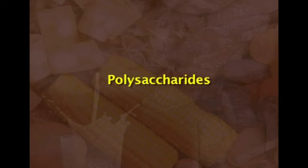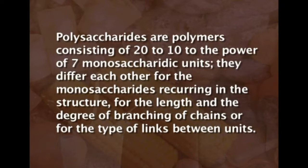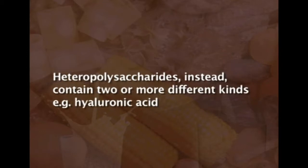Polysaccharides are polymers consisting of twenty to ten-to-the-power-of-seven monosaccharide units. They differ in the monosaccharides that recur in their structure, the length and degree of branching of chains, and the type of links between units. They are classified as homo- and heteropolysaccharides. Homopolysaccharides contain only one type of monosaccharide — for example, starch and glycogen.